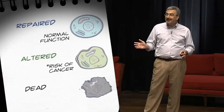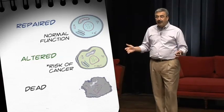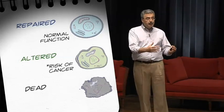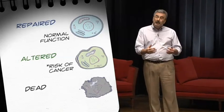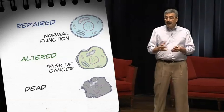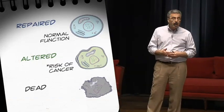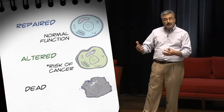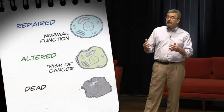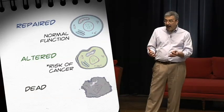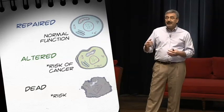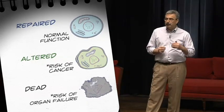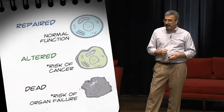Cell death is actually not a bad thing. If only a few cells die, the function of that tissue is not impaired, and we don't have the potential for a misrepaired cell to later cause harm. But if the dose is high and a large number of cells die, that impairs the function of that organ — we get organ failure at that point.